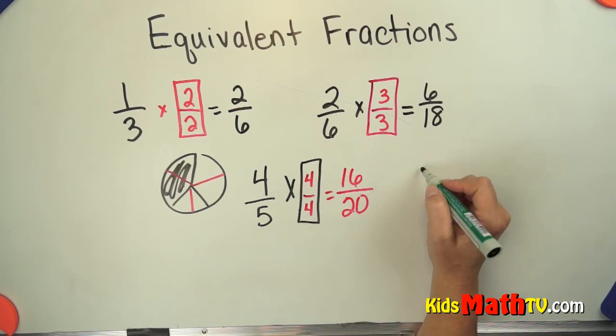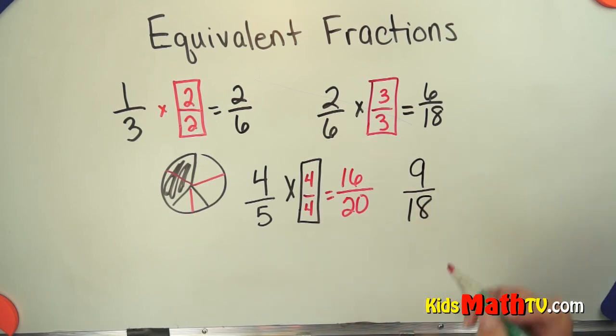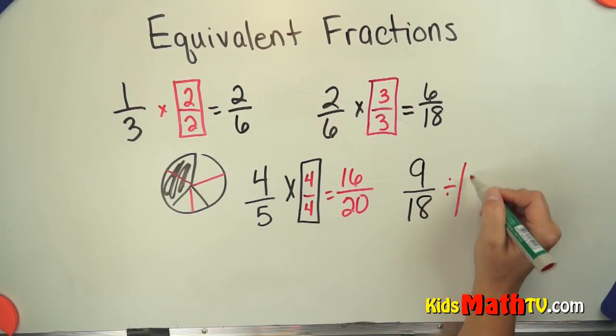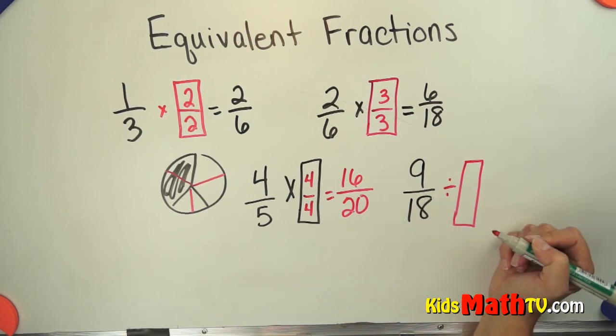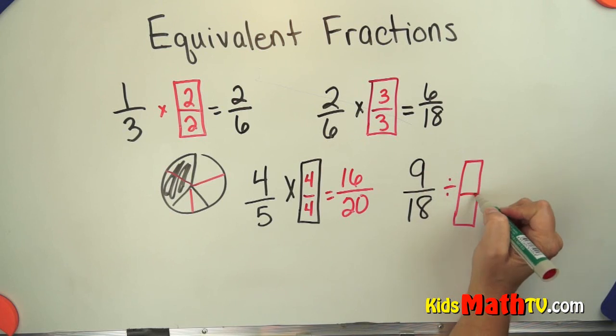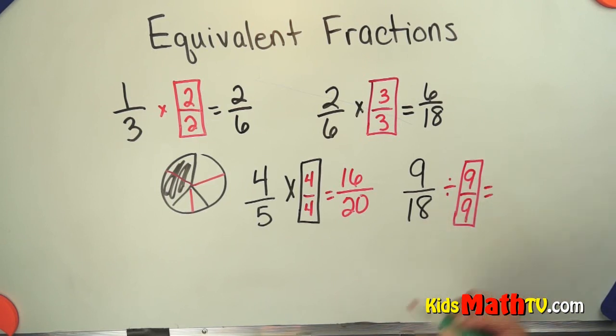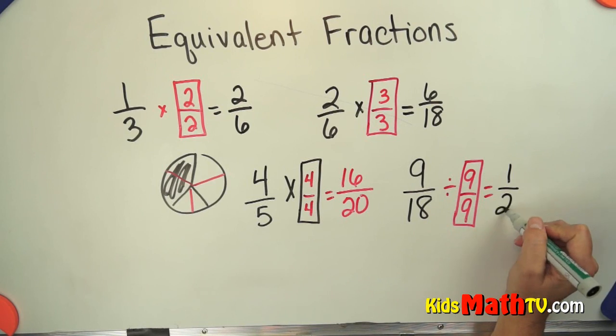I can do something like 9 over 18. I can actually divide by 1 as well. Any number divided by 1 is that same number. So I know that 9 will divide 9 and 18. It has to be the same numerator and denominator. 9 over 9 is 1 whole. And if I do that division 9 divided by 9 is 1. 18 divided by 9 is 2.